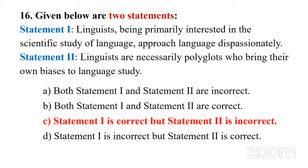The answer is C: statement one is correct but statement two is incorrect. Linguistics is generally defined as the scientific study of language. As a scientific study, you must be objective — you cannot say your mother tongue is superior to other languages. A linguist should love and treat all languages as equals. Linguists need not be polyglots; they may master one language while having acquaintance with others.